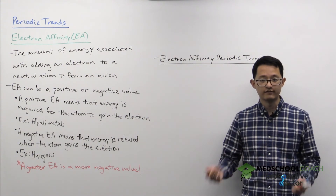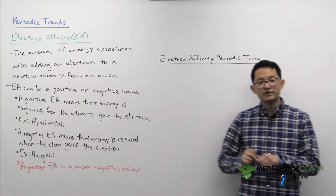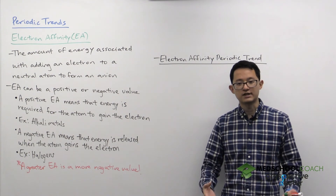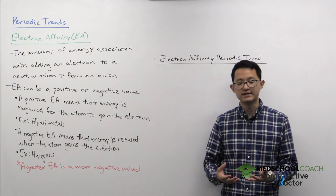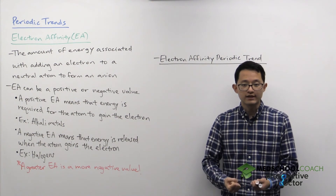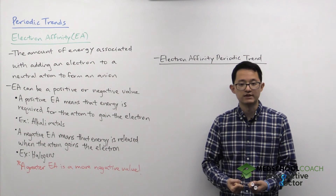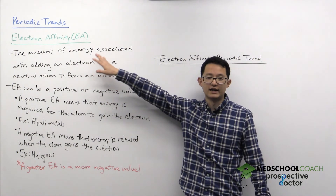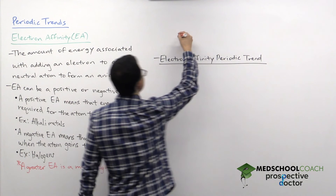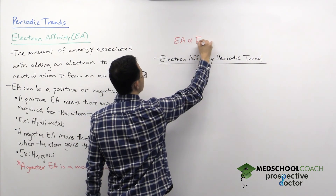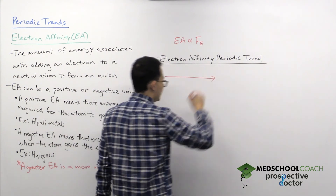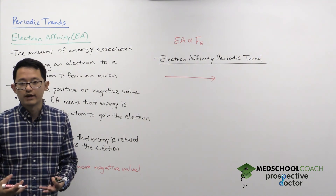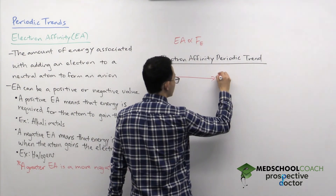Now let's take a look at the periodic trend for electron affinity, and again we're going to relate this to the trend for the electrostatic force. If you have a stronger electrostatic force, that means your nucleus is holding onto its valence electrons more tightly — it's better at attracting its own electrons. In general, if it's good at attracting electrons, it's also going to have a high electron affinity. So electron affinity is directly proportional to the electrostatic force, meaning that as you go from left to right across the periodic table, the electrostatic force increases and your nucleus has a greater electron affinity.